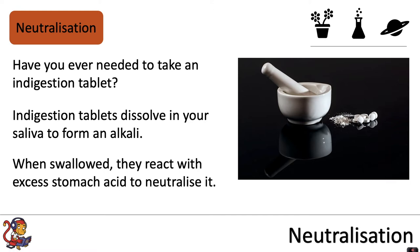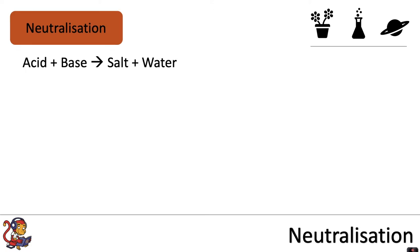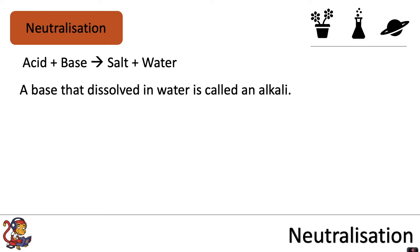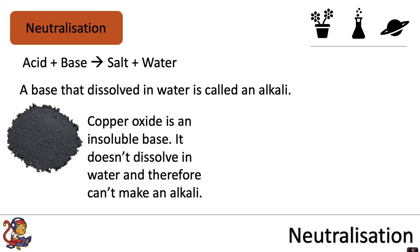Let's now look at the chemistry behind neutralization. The general formula for a neutralization reaction is: acid plus a base makes a salt plus water. But we were just talking about acids and alkalis, and now we're using the word base. Well, a base that dissolves in water is called an alkali. For example, copper oxide is an insoluble base — it doesn't dissolve in water and therefore cannot make an alkali.